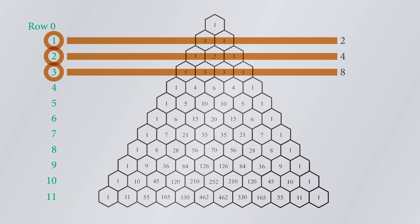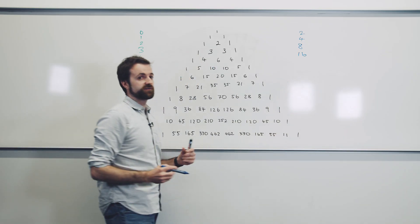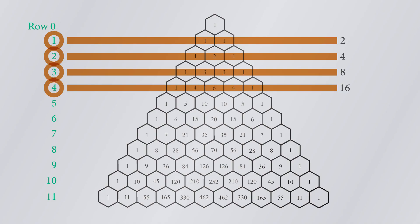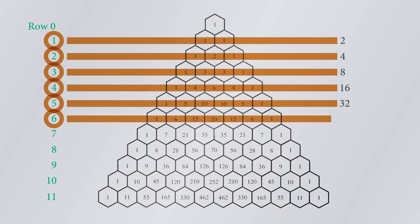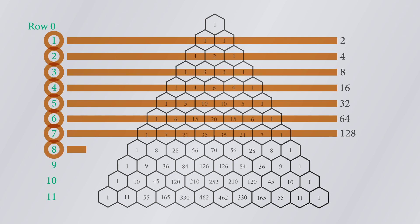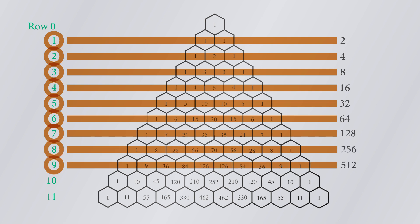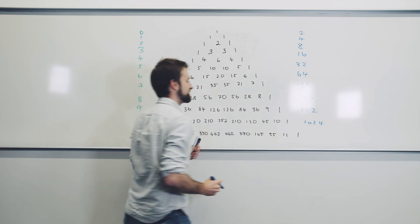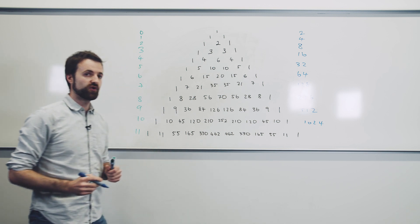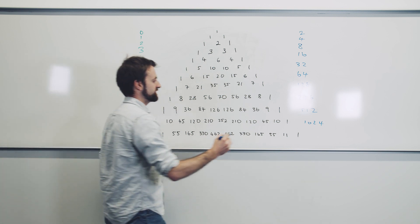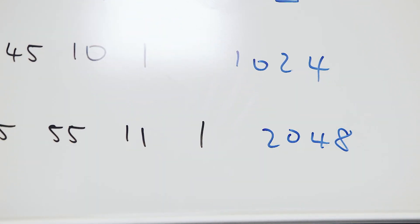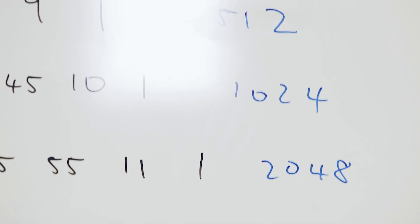These row sums are all powers of two. Flipping a coin four times gives 16 different combinations — that's 2 to the 4. Then 2 to the 5 is 32, then 64, 128, 256, 512, 1024. By the time we're flipping the coin eleven times, there are 2048 different permutations of heads and tails that can come up.